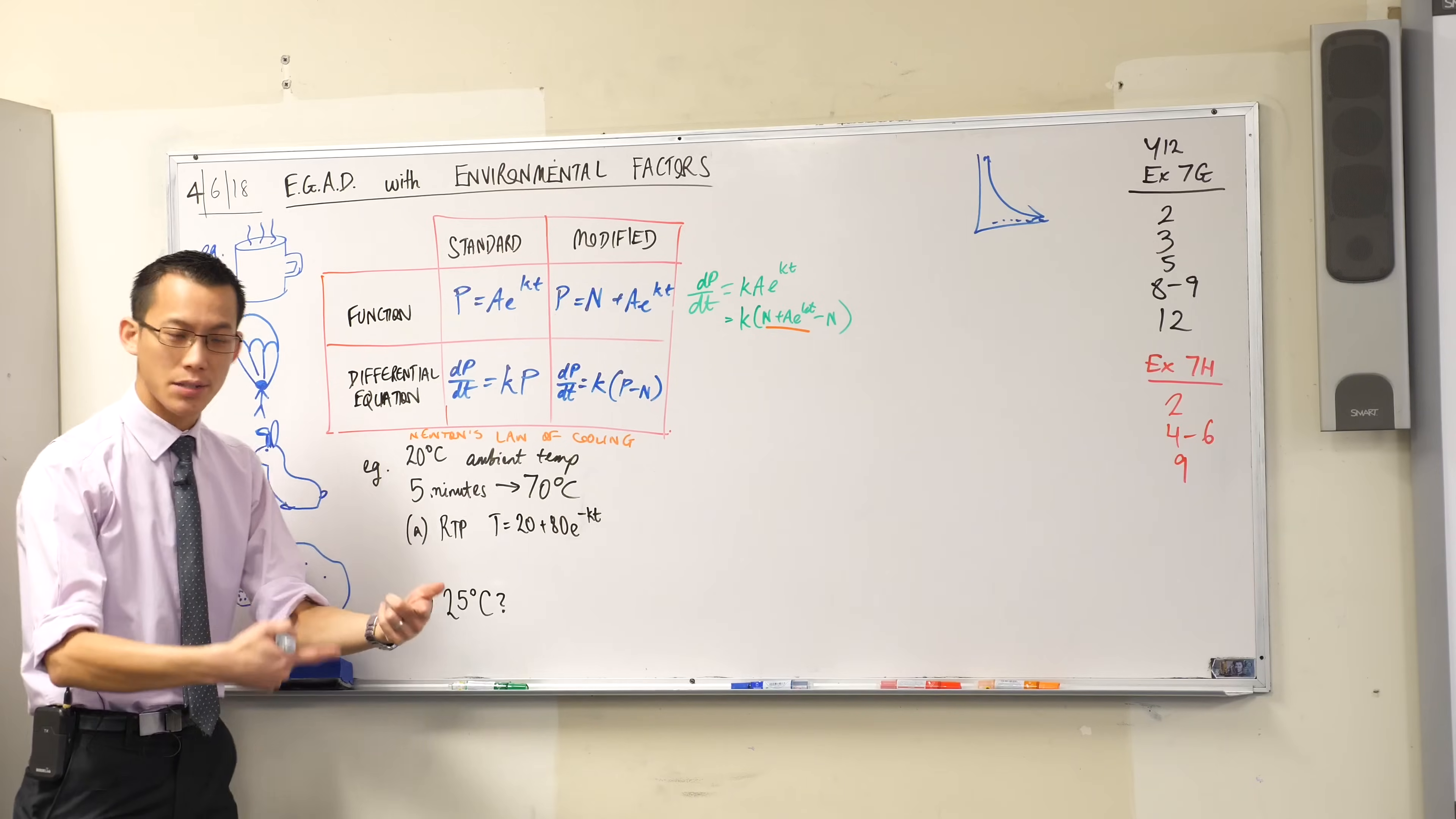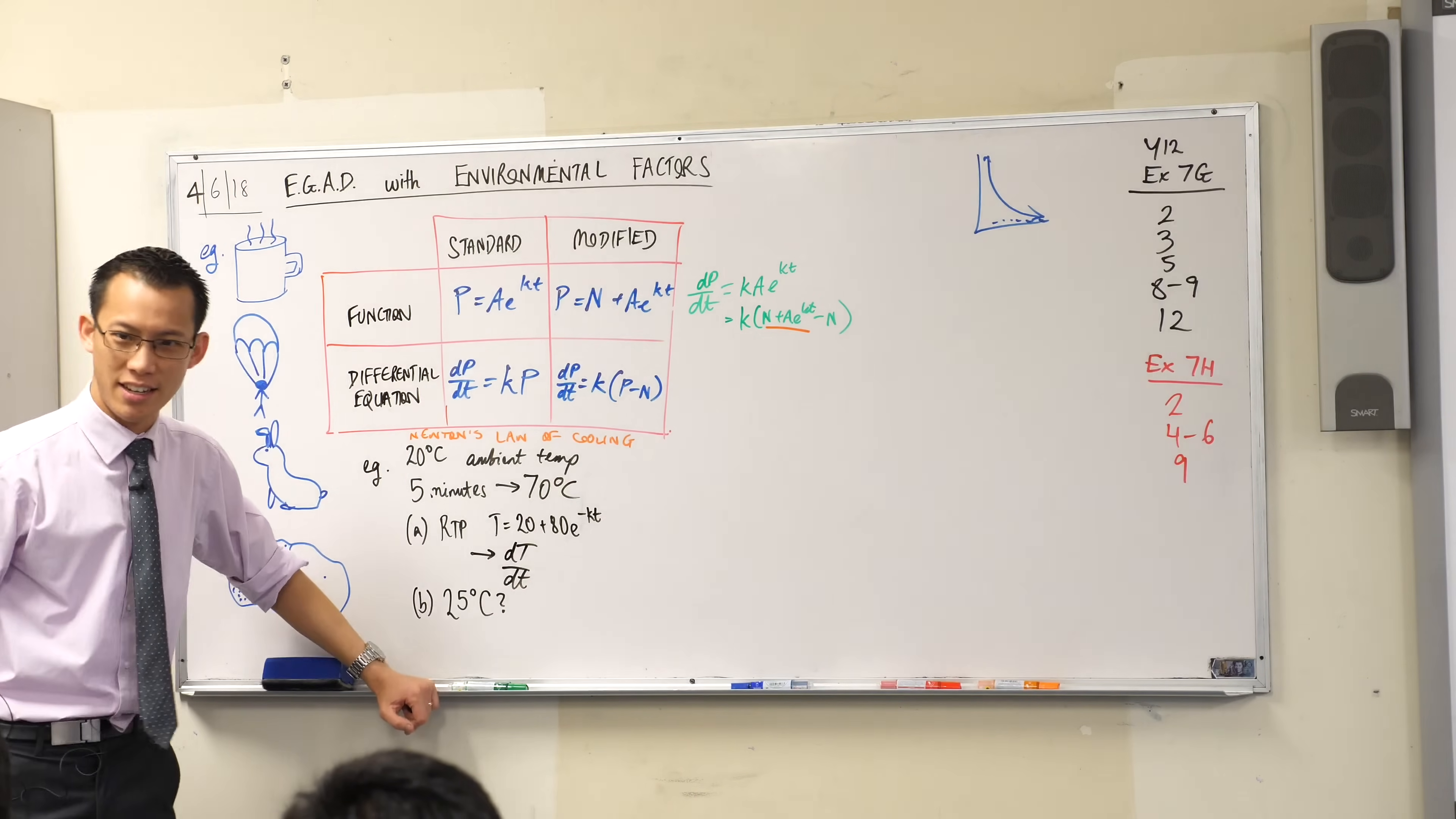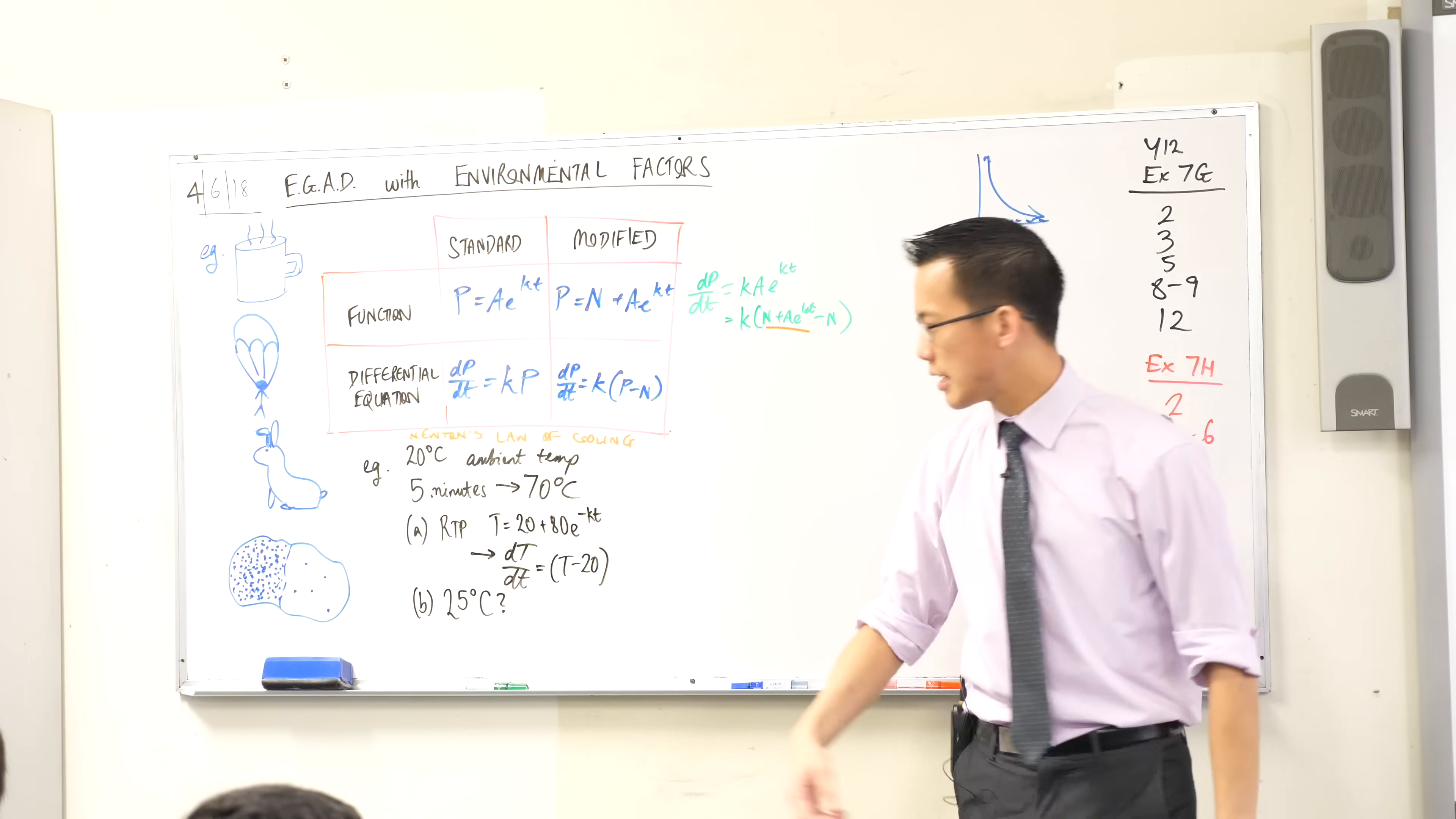Two questions. These exponential growth and decay questions always begin like this: you're going to be required to prove that a particular function is going to satisfy the relevant differential equation. In situations where you're dealing with temperature and time, both start with t but we use t anyway. I've got capital T for temperature and little t for time. That means my differential equation will have dT/dt.